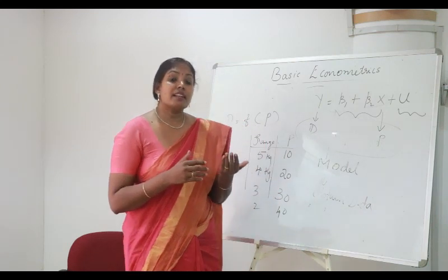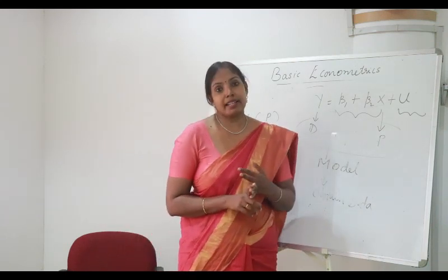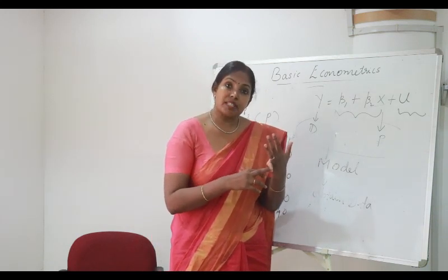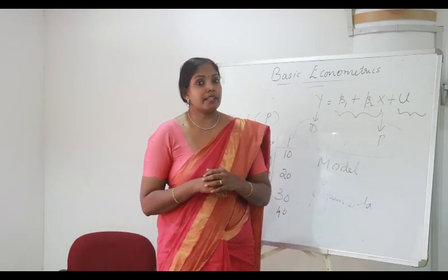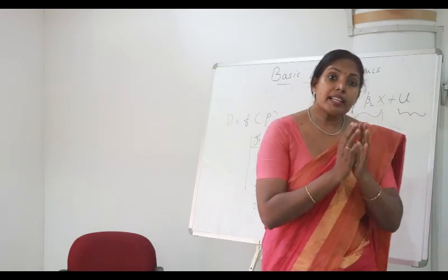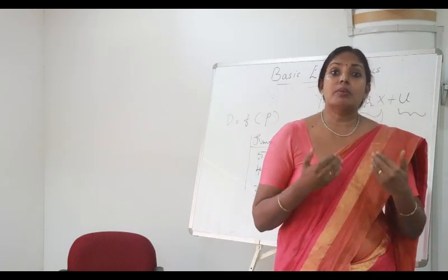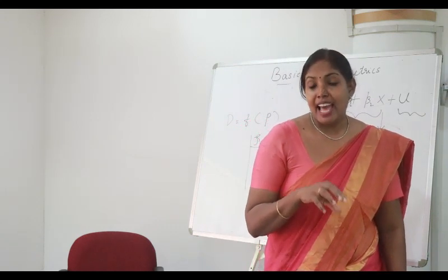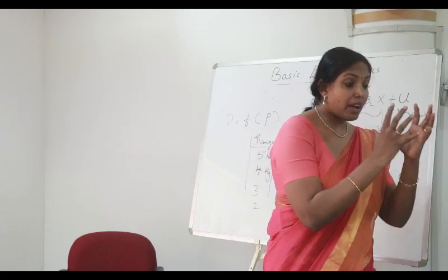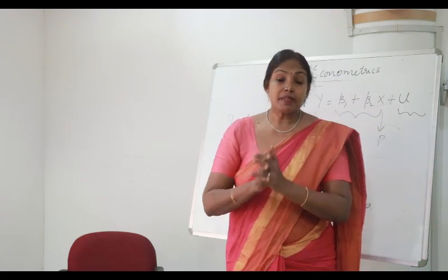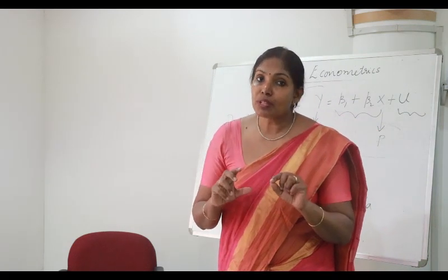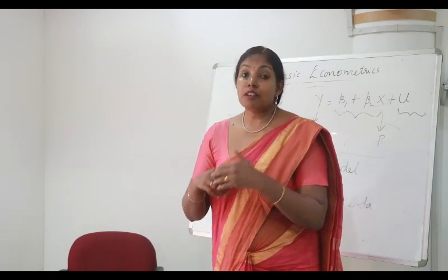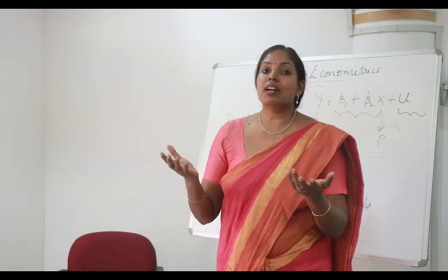Econometrics is divided into theoretical econometrics and applied econometrics. These are again subdivided into classical econometrics and Bayesian econometrics, both theoretical and applied. The theoretical econometrics under classical or Bayesian systems helps to formulate or validate theories, while the applied econometrics looks into applying economic theory with empirical analysis, finding results, and making predictions and forecasting.